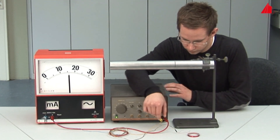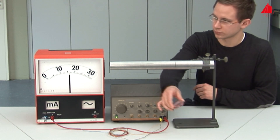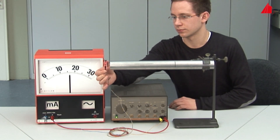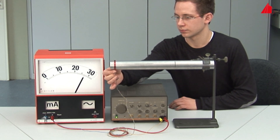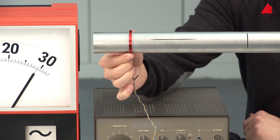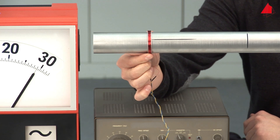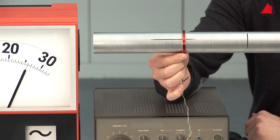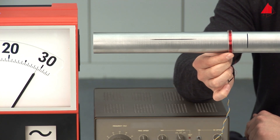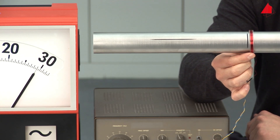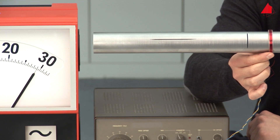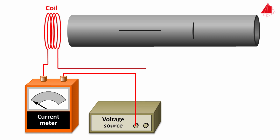This closes the electrical circuit; the current consumption of the coil is still relatively low. Once the coil is positioned over the intact part of the tube, the magnitude of the current is high. The current decreases in the region of the longitudinal cut and reaches the original magnitude again in the intact part of the tube. The cut in circumferential direction has apparently no influence on the current. The animation shows the physical background.